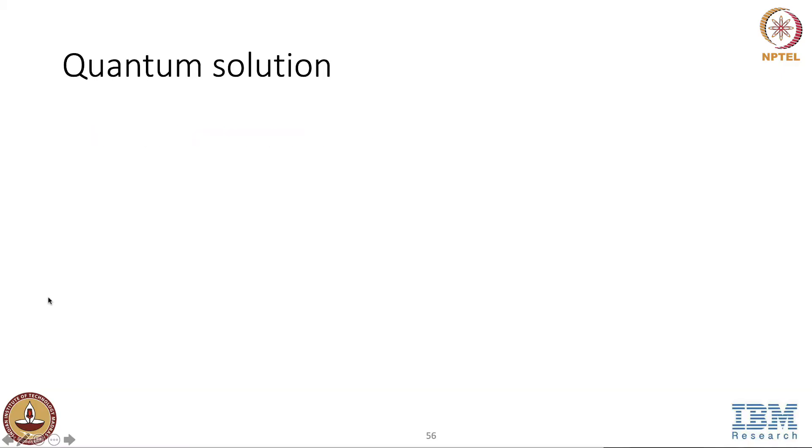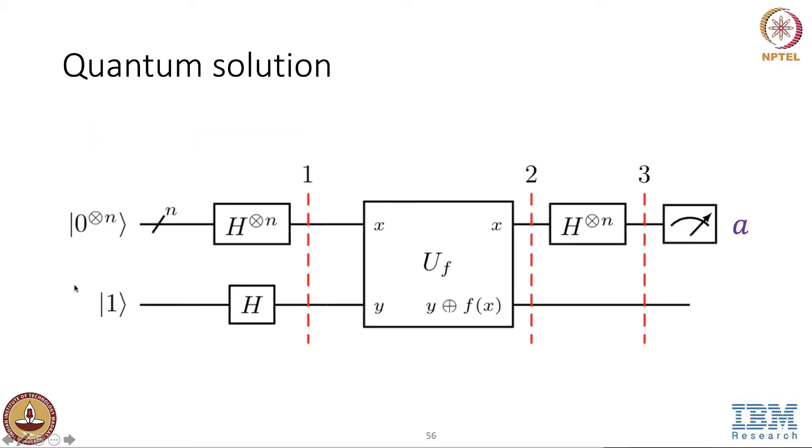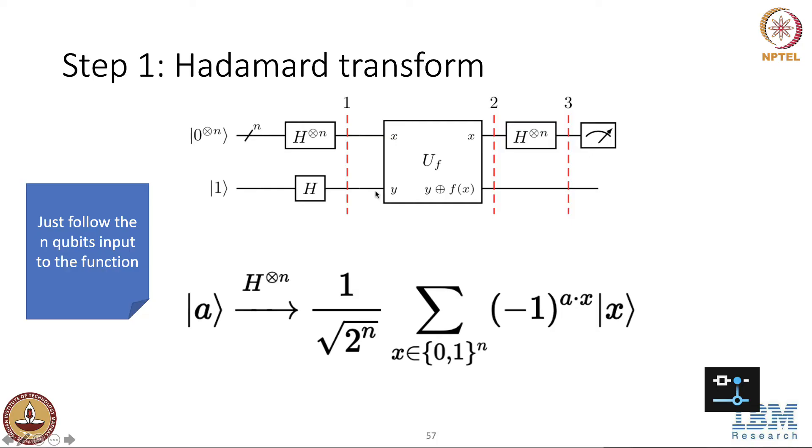Now, let's look at the quantum solution for it. I'm just displaying the end-to-end quantum solution in a single picture. But here, I think you guys remember this diagram, right? The quantum algorithm to solve the Bernstein-Vazirani problem is same as the algorithm that same as a set of steps that's used to solve the Deutsch-Jozsa problem.